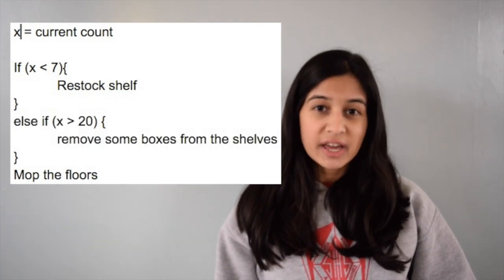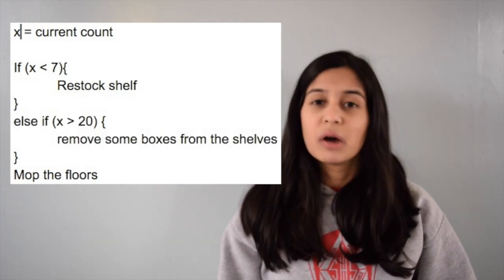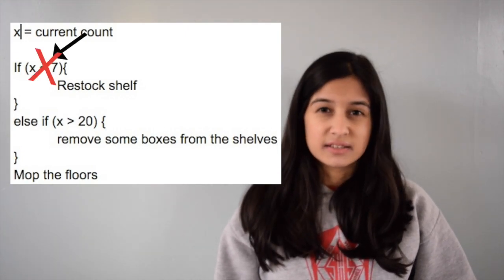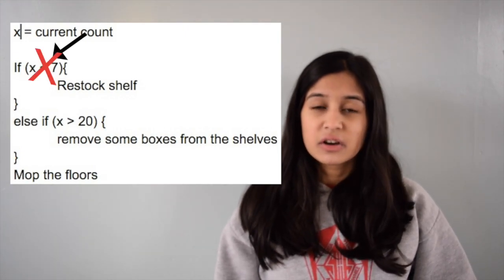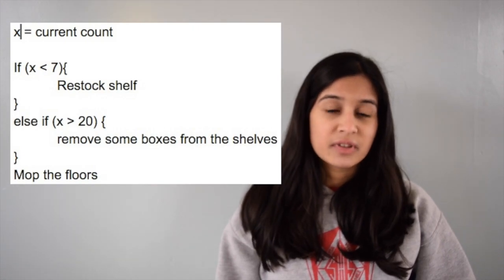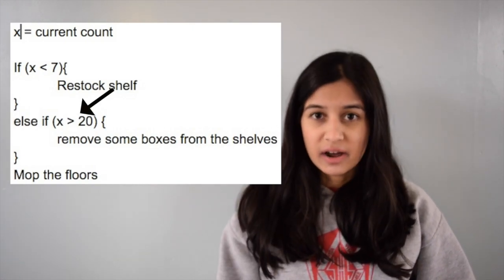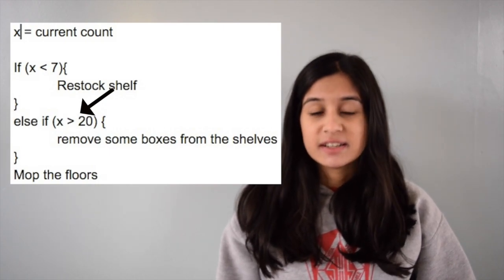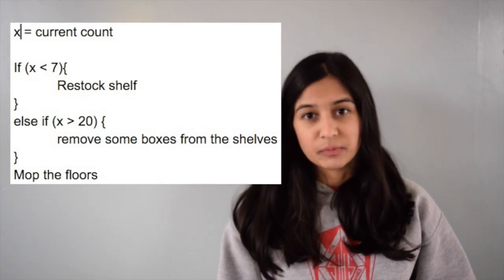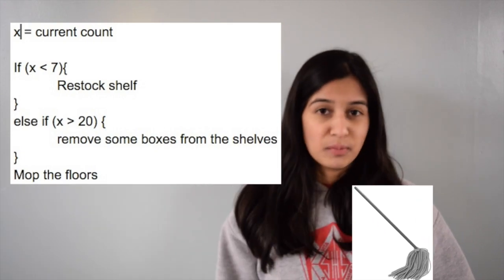However, let's say that we counted 29 boxes on display. Approaching the if statement, 29 is not less than seven, so we're not going to carry out the actions in the if statement. So then we're going to look at the else-if statement — 29 is greater than 20, so therefore we're going to go ahead and remove some boxes from the shelf. And then after that, we will mop the floors.